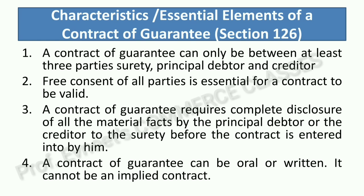Next are the characteristics — sometimes also called essential elements — of a Contract of Guarantee. These are under Section 126. First: a Contract of Guarantee can only be between at least three parties — Surety, Principal Debtor, and Creditor. A Contract of Guarantee always involves three parties.